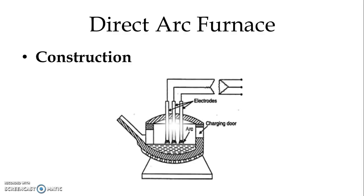Temperature can be maintained between 1500 to 2500 degrees centigrade. Charging and pouring doors are provided. The similar type of construction can be used for three-phase Arc Furnace also. In case of three-phase, we use three electrodes.